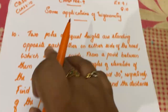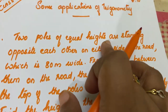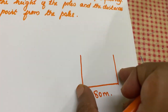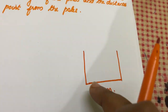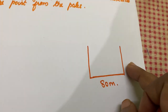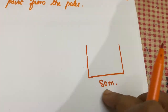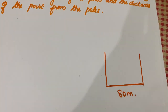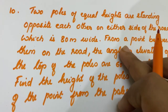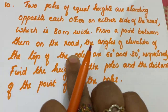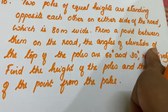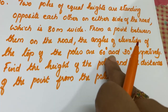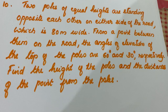The two poles are on either side of the road. The road is 80 meters wide. From a point between them on the road, the angles of elevation of the top of the poles are 60 degrees and 30 degrees respectively.